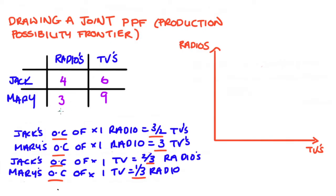So for instance, for radios, which is our vertical axes good, Jack can make four and Mary can make three. So together, if they were both just specializing in radios, they could make seven. So this intercept corresponds to a point of perfect specialization in the economy of radios and no TVs are being made at this point.